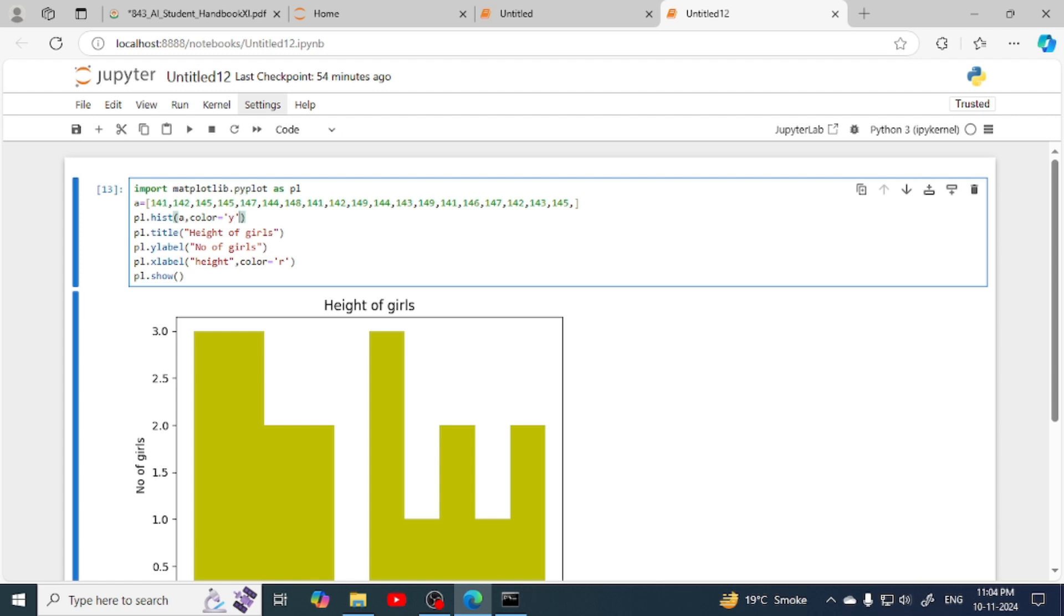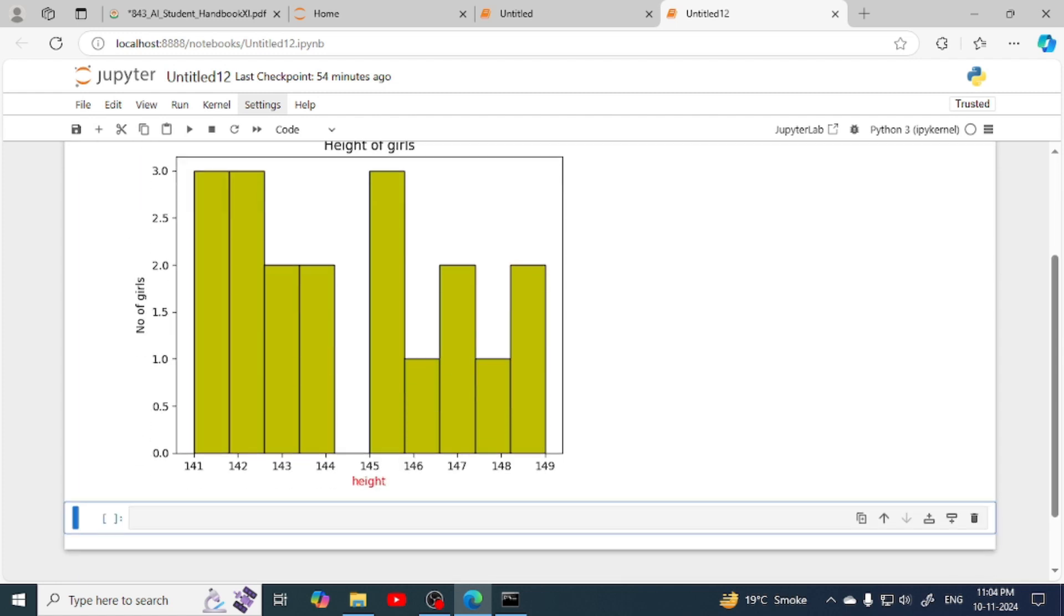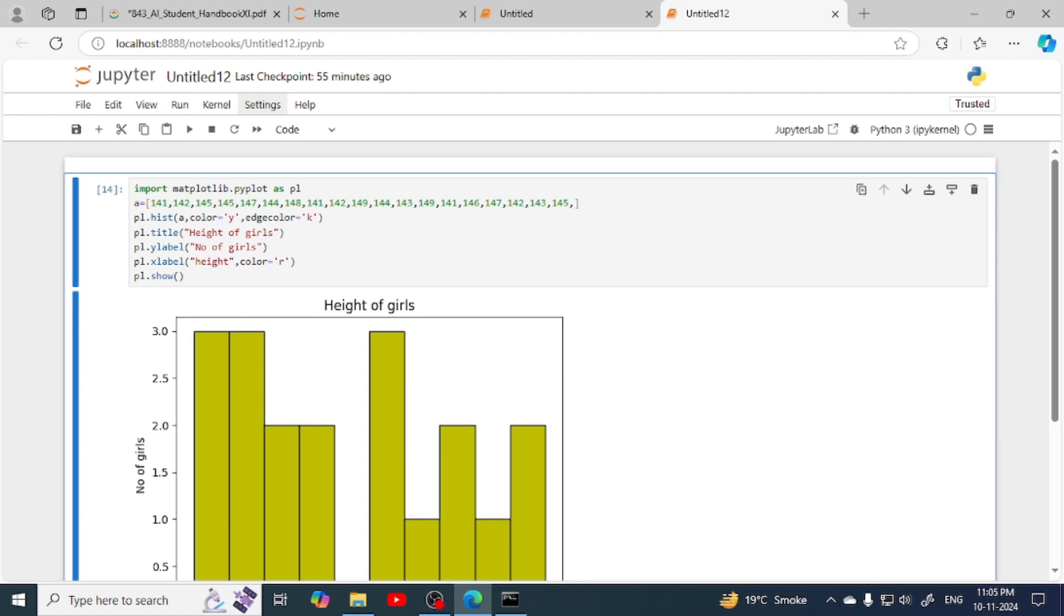We can try using the edgecolor attribute. Write comma, then edgecolor equals to k. Now we are going to run, and now we can easily identify that for 141 this is the bar, then 142, then 143, and 144. Similarly from 145 to 149 the bars are here. Now you can try more attributes on your own, like width, line style - whatever attributes we used in previous charts, you can apply them to this chart also.